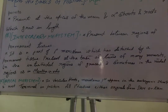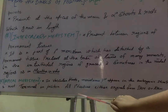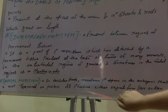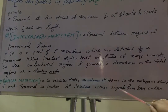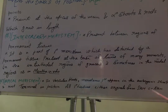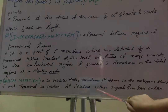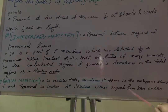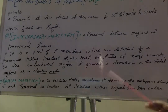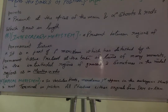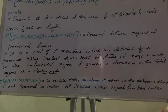Apical meristem is present in the terminal position. All primary tissues either originate from shoot apical meristem or root apical meristem. This is the end of the classification topic, and in the next video the topic will be shoot apical meristem.